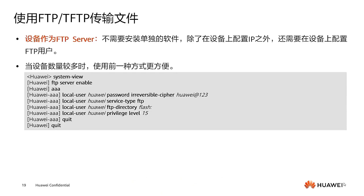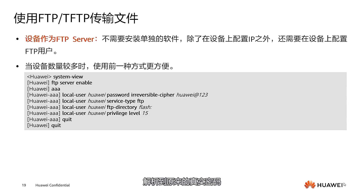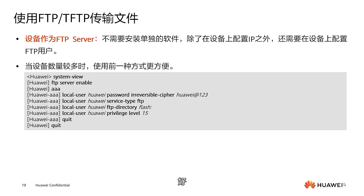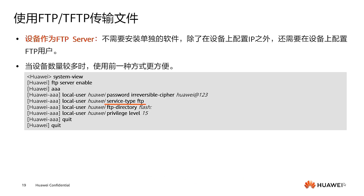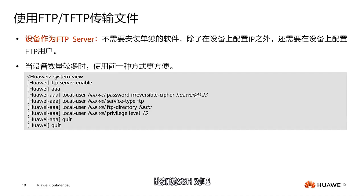Moving on, the next issue is authentication failure, which could be due to incorrect username or password entries. Exceeding the maximum capacity of AP-managed terminals is very rare — for example, even the simplest APs today might have a capacity for 256 users, but we might limit it to a maximum of 50, which could lead to terminal limit issues. There is also the issue of the RF load being too heavy on associated terminals, similar to RF tuning problems.